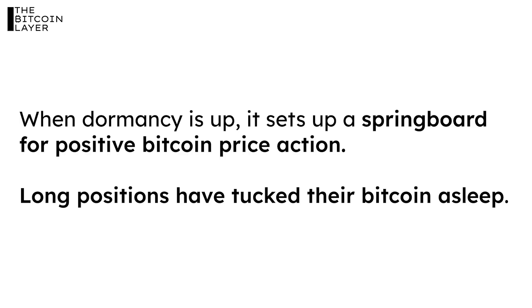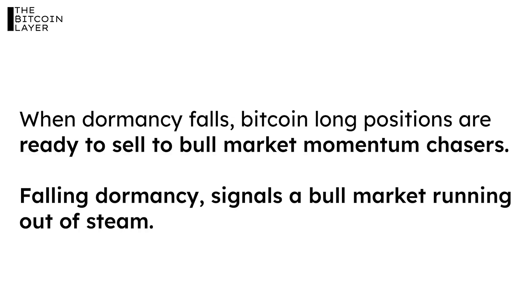When dormancy is up, it sets up a springboard for positive price action for Bitcoin, because long positions have tucked their Bitcoin away to sleep and are not ready to bring it out into the market until much later. We also learn that when dormancy falls, it means Bitcoin long positions are ready to sell to bull market chasers and momentum chasers. So we should be able to use falling dormancy as a sign that a bull market is running out of steam.